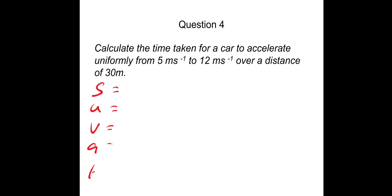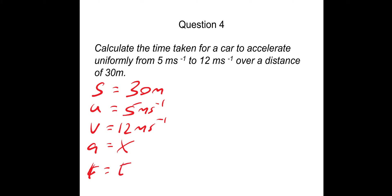Question four: calculate the time taken for a car to accelerate uniformly from 5 meters per second to 12 meters per second over a distance of 30 meters. Writing SUVAT: S is 30 meters, U is 5 meters per second, V is 12 meters per second, acceleration A we're not interested in, and T is what we're looking for. Since there's no acceleration needed, we use S equals one-half times U plus V times T.